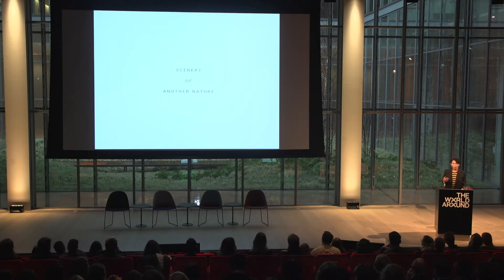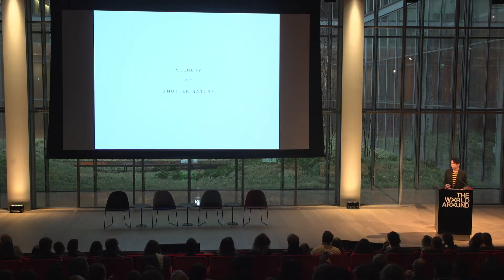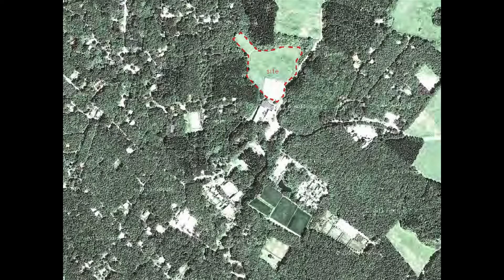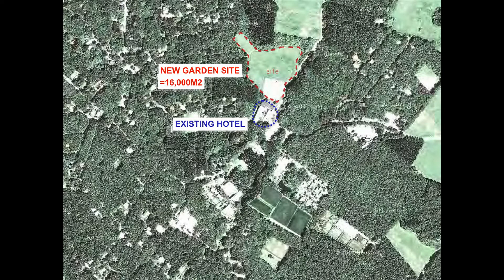Through this project, I want to create a new natural environment in the existing forest, and also I want to create another nature within the existing natural environment. This is the aerial photograph. The blue part is the existing hotel, and this red part is the site of the garden. The area of the site is more than 60,000 square meters.